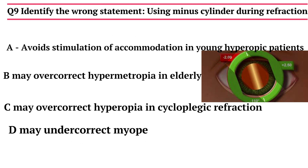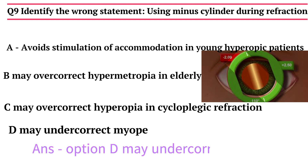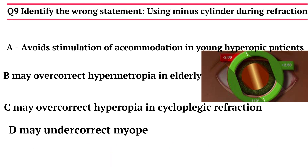Using minus cylinder during refraction: Option A - avoids stimulation of accommodation in young hypermetropic patients, Option B - may overcorrect hypermetropia in the elderly, Option C - may overcorrect hypermetropia in cycloplegic refraction, Option D - may undercorrect myopia. The correct answer is Option D: may undercorrect myopia.